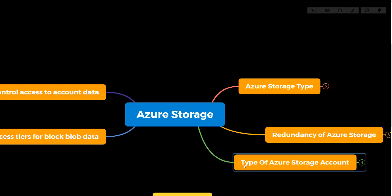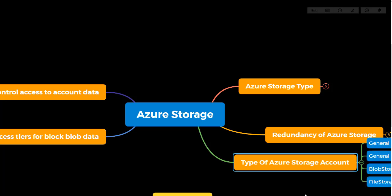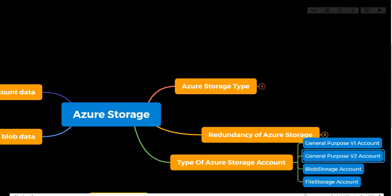Now that we know the storage types and redundancy options, let's discuss the types of Azure storage accounts — how many types we can create in the Azure portal. The first account type is General Purpose V1, which is an older version. Microsoft does not recommend using this account; most people in production use General Purpose V2, which provides more features.